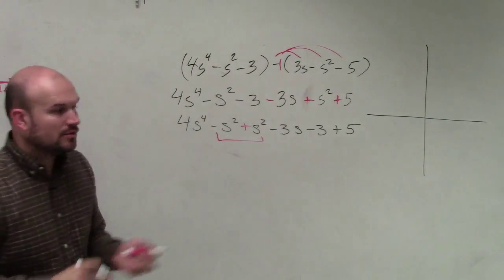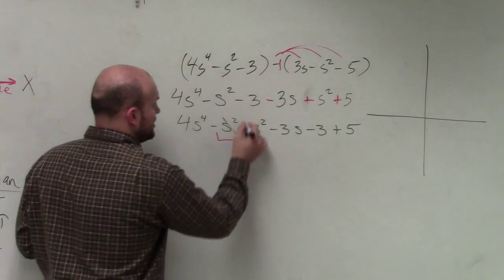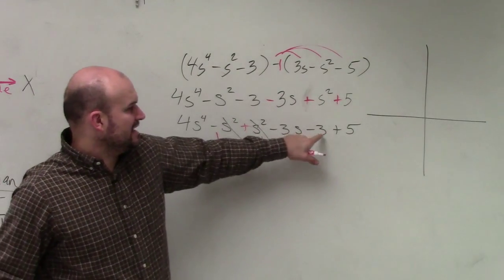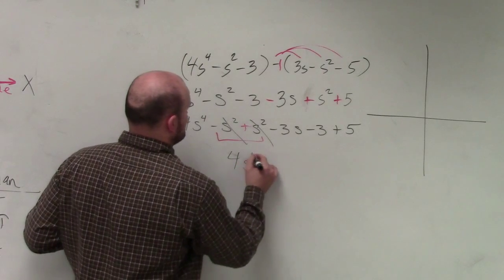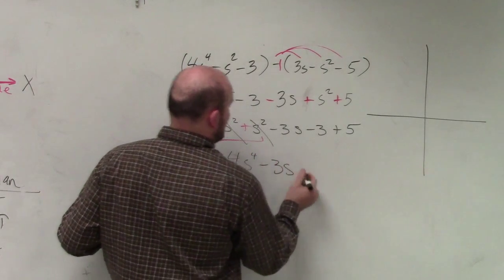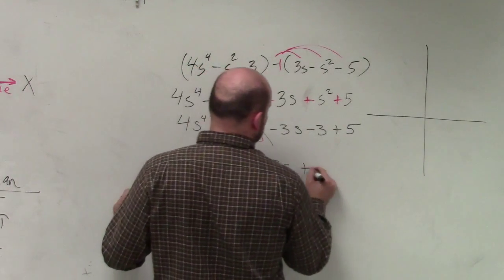So you can see these s squareds. Well, you have a negative and positive, so that goes to 0. Negative 3s and then negative 3 plus 5 is going to be a positive 2. So I have 4s to the fourth minus 3s and then plus 2.